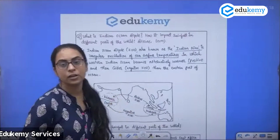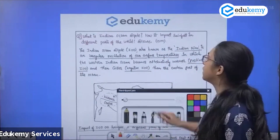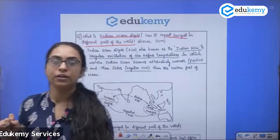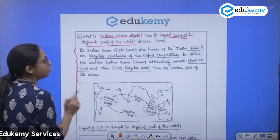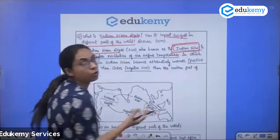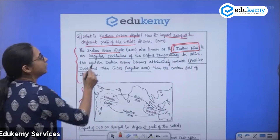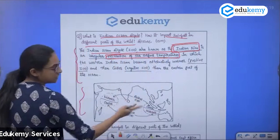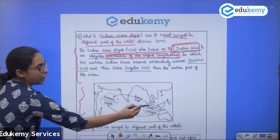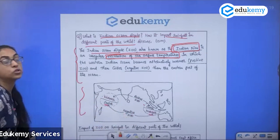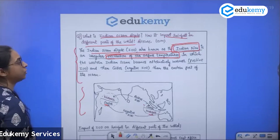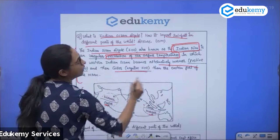The question asks about Indian Ocean Dipole and how it impacts rainfall in different parts of the world. IOD is called the Indian Nino — just like El Nino and La Nina. It involves oscillation of sea surface temperature, where the western ocean alternately becomes warmer and then cooler than the eastern part.